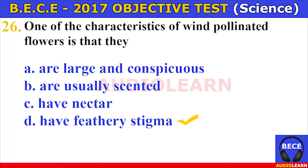Number twenty-five. Which of the following changes normally occur during old age in humans? A. Gray hair starts appearing, B. Mental alertness increases, C. Broadening of chest, D. Attraction of the opposite sex. The answer is A. Gray hair starts appearing. Number twenty-six. One of the characteristics of wind-pollinated flowers is that they A. are large and conspicuous, B. are usually scented, C. have nectar, D. have feathery stigma. The answer is D. Have feathery stigma.